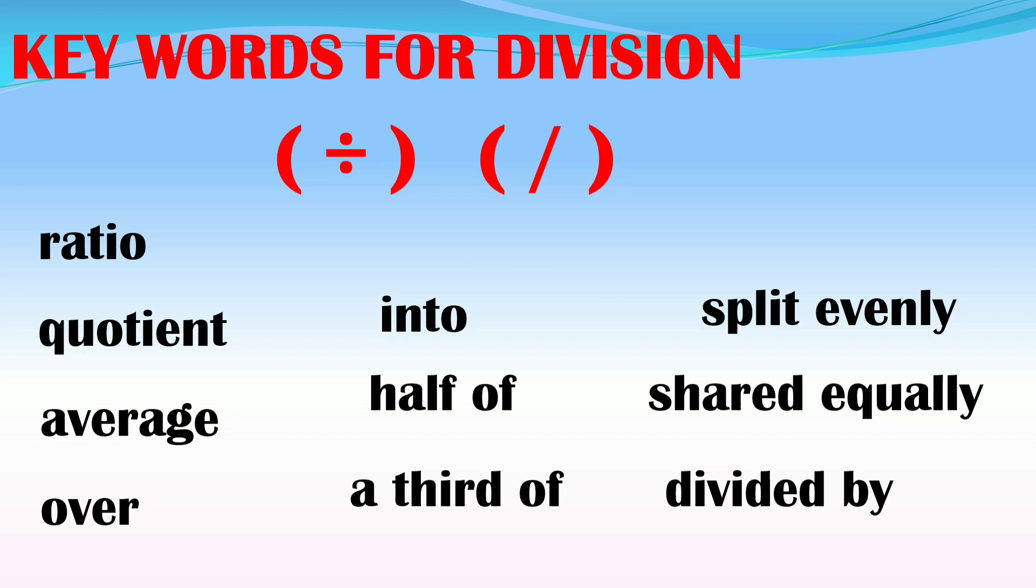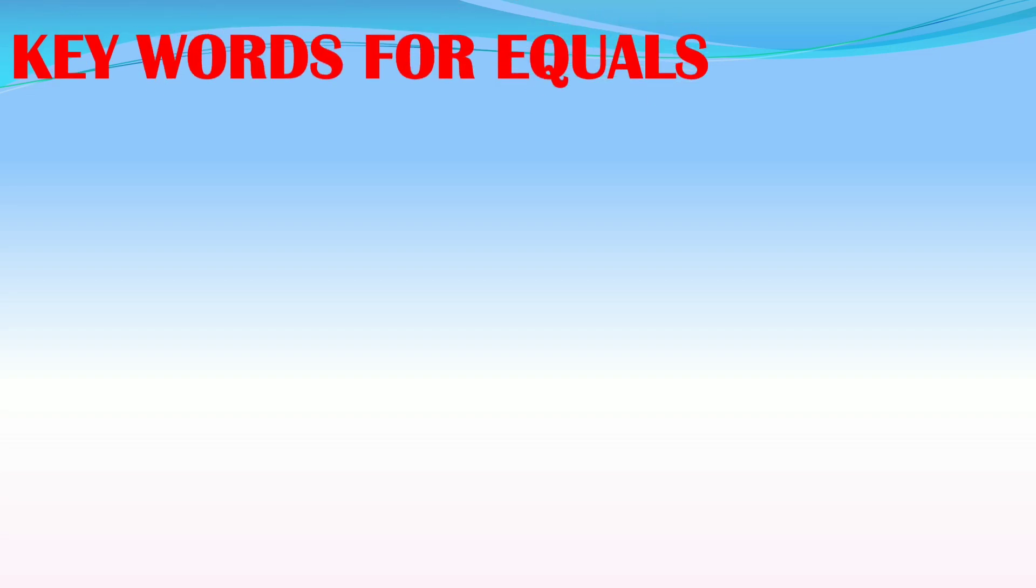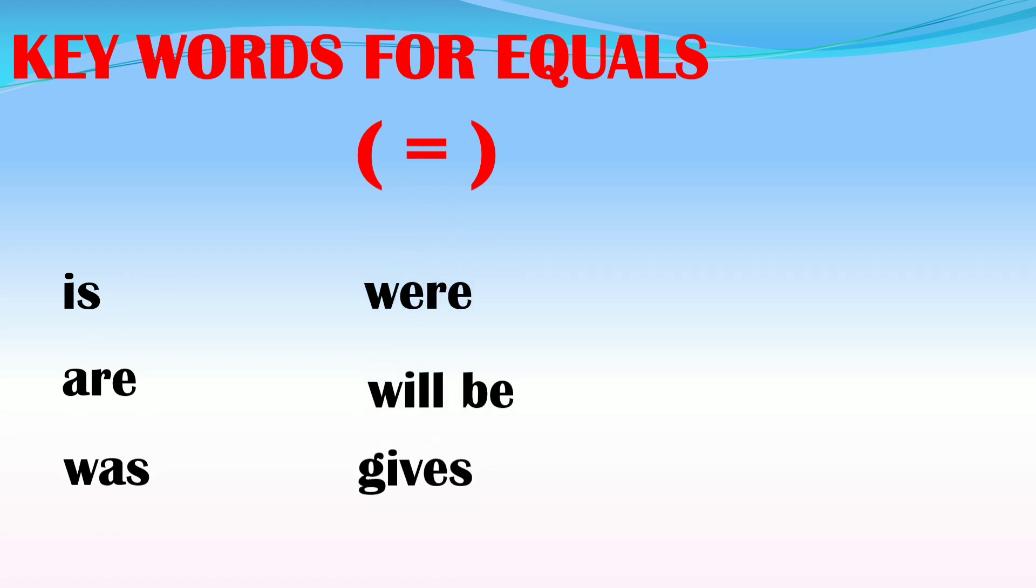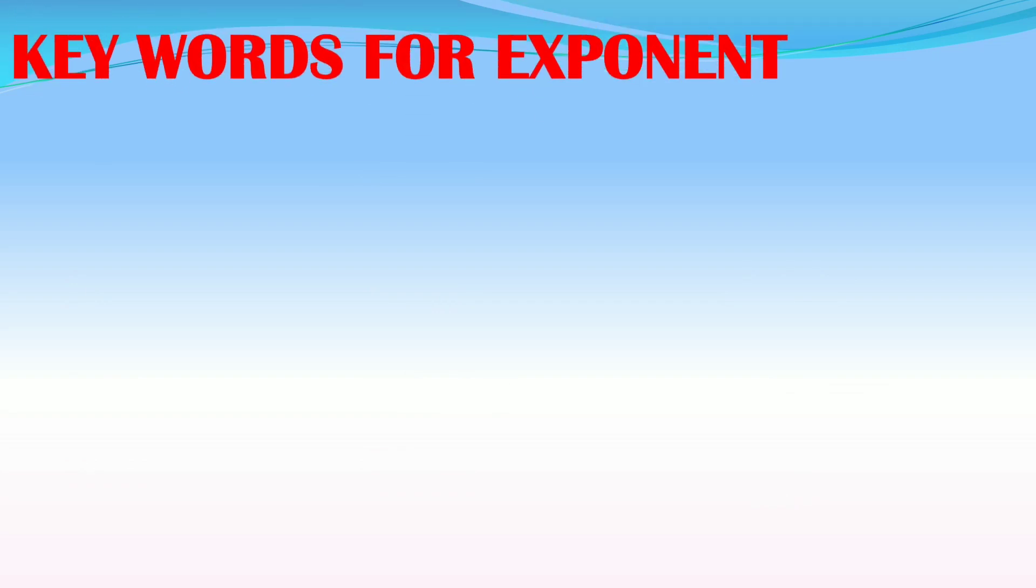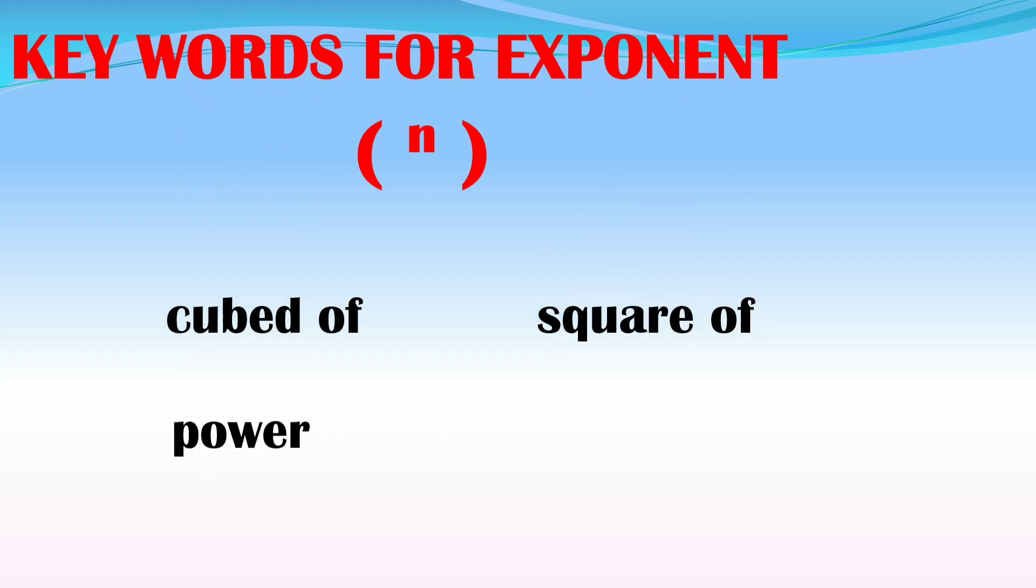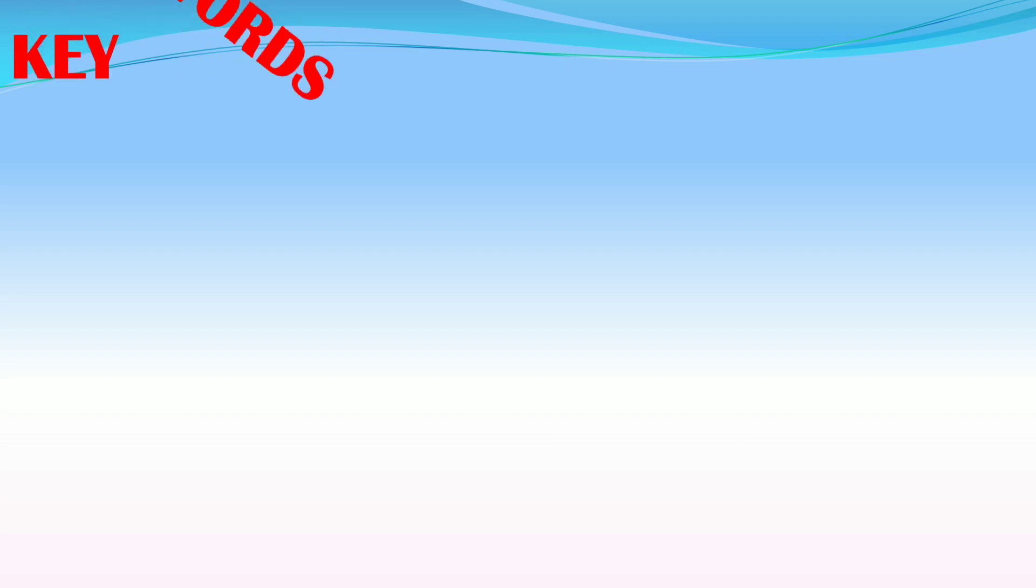Those are the keywords for the four operations. There are other keywords for other terminologies in mathematics. Keywords for equals - this is the equal sign symbol: is, are, was, were, will be, gives, yields, sold for, cost. Keywords for exponent - the symbol is the small number at the top of the base: cube of, power, square of, raised to.